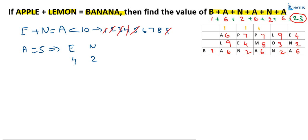Verifying: 6 plus 2 equals 8, plus 2 equals 10, plus 6 equals 16, plus 6 equals 22, plus 1 equals 23. This is the solution to APPLE plus LEMON equals BANANA. We will meet again in the next video. If you have not subscribed yet, please subscribe to the channel for regular updates on not only cryptarithmetic but also arithmetic. Thank you one and all.